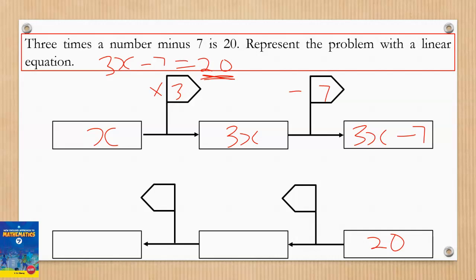Going in the opposite direction starting from 20, we saw subtraction so we do addition. We add 7 to 20 to give us 27, so this becomes equivalent to that.